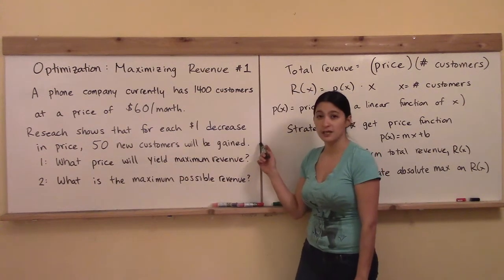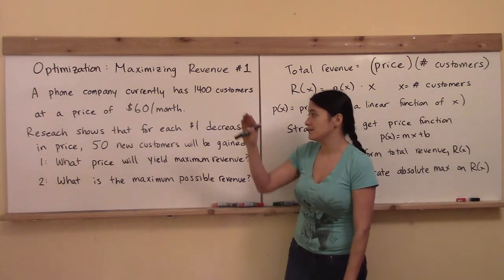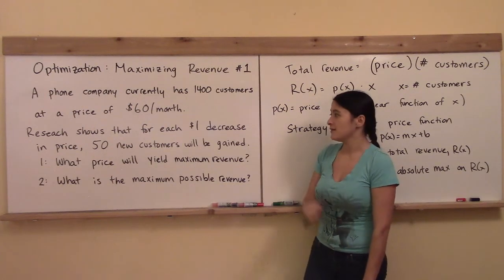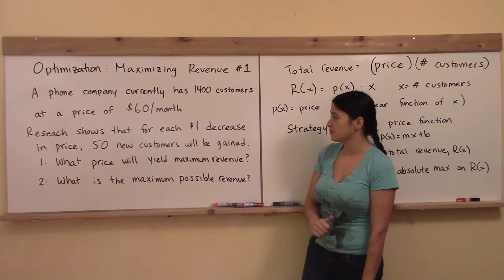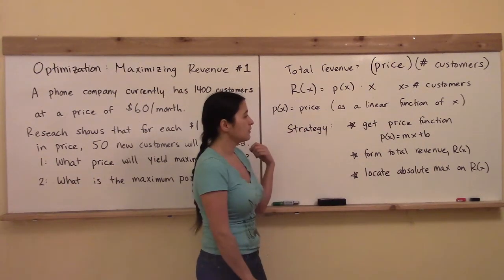This sentence right here gives us a hint that this is a linear function because if we step down one in price, we're going to get 50 more customers each time. That's a constant slope, and so we'll be able to form P(x) in the form y equals mx plus b.